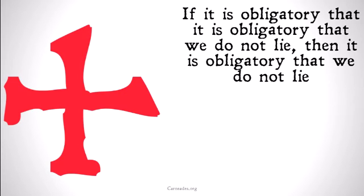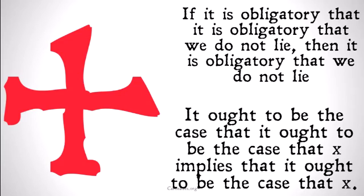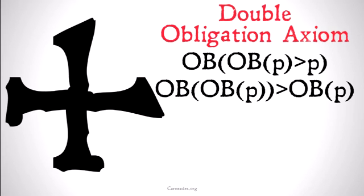When we go to the corollary, it gets a bit more confusing. If it's obligatory that it's obligatory that you don't lie, then it is obligatory that you don't lie. It ought to be the case that it ought to be the case that X implies that it ought to be the case that X. The way I think of it is in terms of obligating that obligations are fulfilled, or simplifying a string of obligations down to a single obligation.